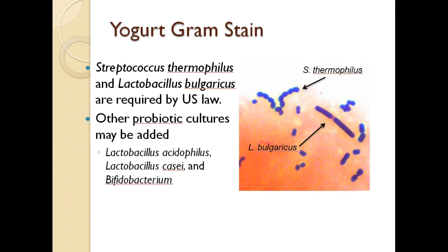You'll also be gram staining some yogurt. In the yogurt you will see two gram-positive organisms. You'll see Streptococcus — recognizable by the typical chain of cocci — specifically Streptococcus thermophilus. You'll also see a rod-shaped bacterium, Lactobacillus bulgaricus. These two are required by U.S. law to be in yogurts. Very often other probiotic cultures are added, such as Bifidobacterium — sold under the proprietary name Bifidus regularis in Dannon Activia — as well as Lactobacillus casei or Lactobacillus acidophilus. The red matrix in the background is the protein in the yogurt that is staining.